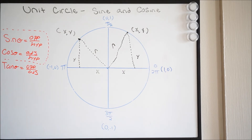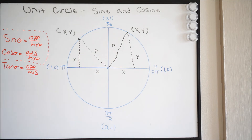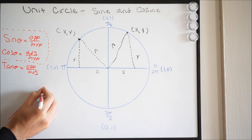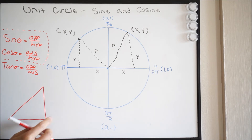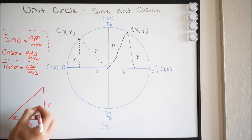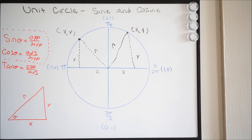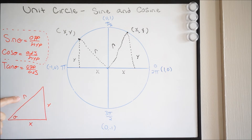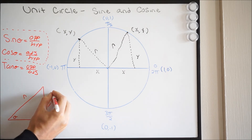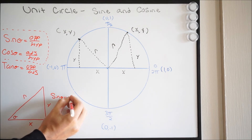Knowing this, I'm going to go ahead and pull this triangle out of the unit circle so we can label it. So here I'll pull it out so we have this triangle. We know that this is going to be theta here, or our angle. Here is x, here is y, and here is r. Now, we know r equals 1 here. So knowing this, sine theta is going to be opposite over hypotenuse. Here is theta, my angle — opposite is going to be y over my hypotenuse, which is r. So you get sine theta equals y over r.